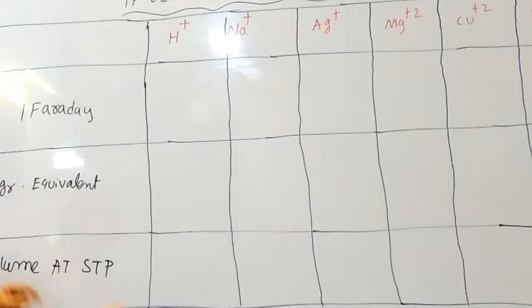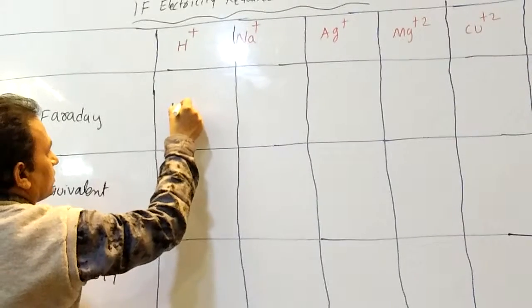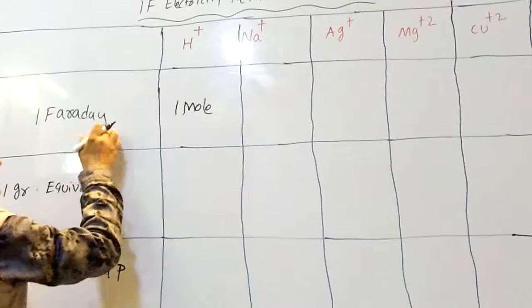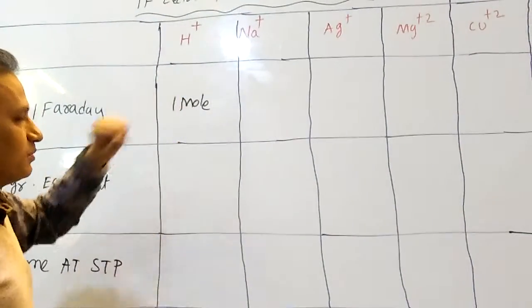Here one Faraday, what is the charge? Charge is plus one. That's why one Faraday means one mole. If you pass the one Faraday electricity, how much moles are deposited? One mole of H+ is deposited.